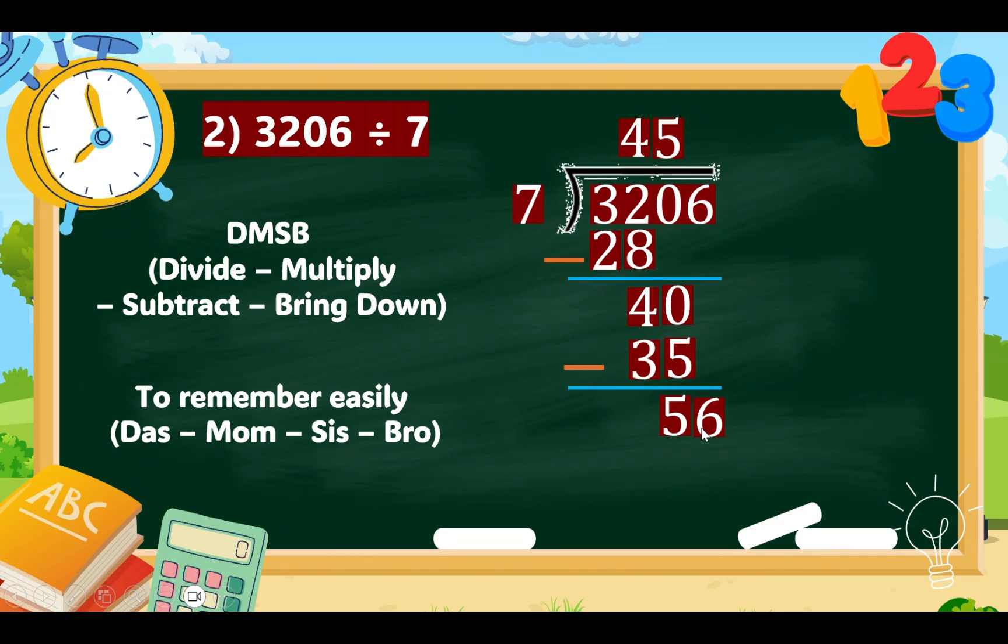Our new number is 56. Repeat the process. Divide 56 by 7. We'll have 8. Multiply 8 times 7. We have 56. Now, subtract 56 minus 56 equals 0. So, the quotient is 458.